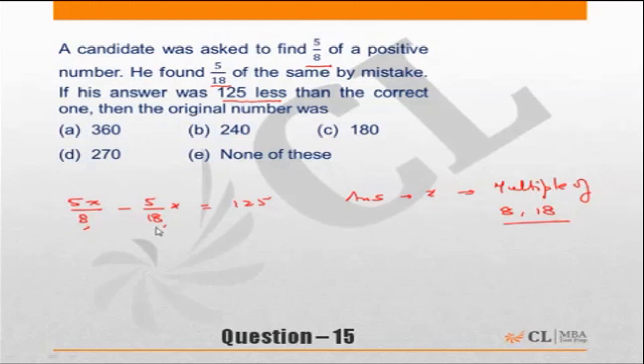Now look at the choices. This is not a multiple of 8, this is incorrect. 180 is again not a multiple of 8. 240 is not a multiple of 18, so that is also incorrect.